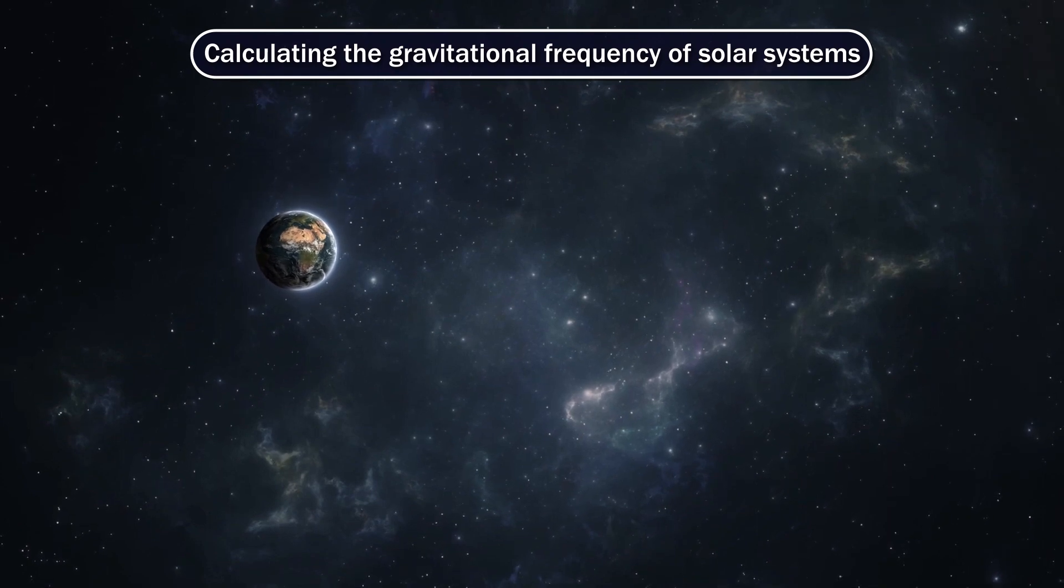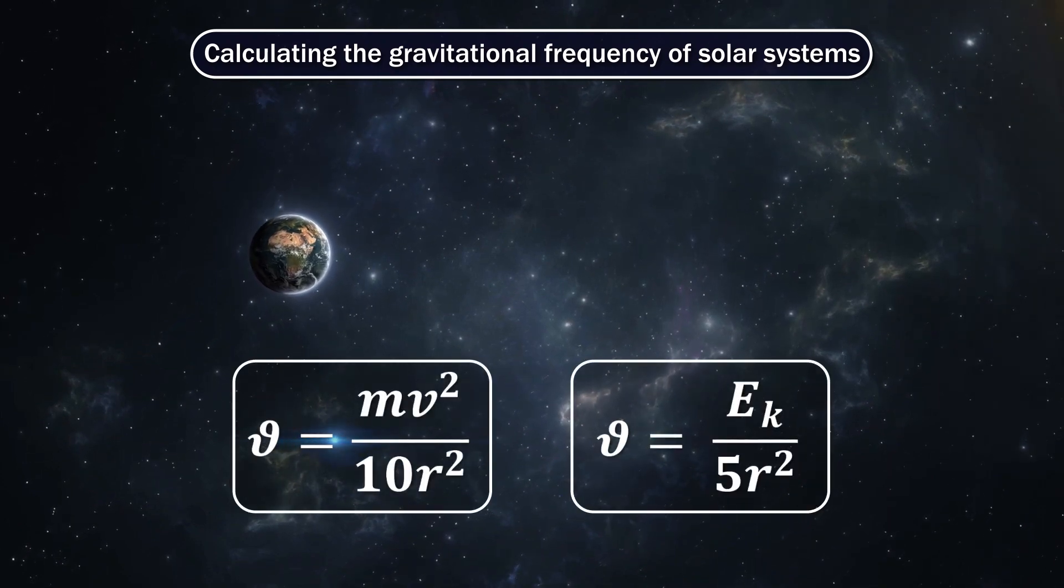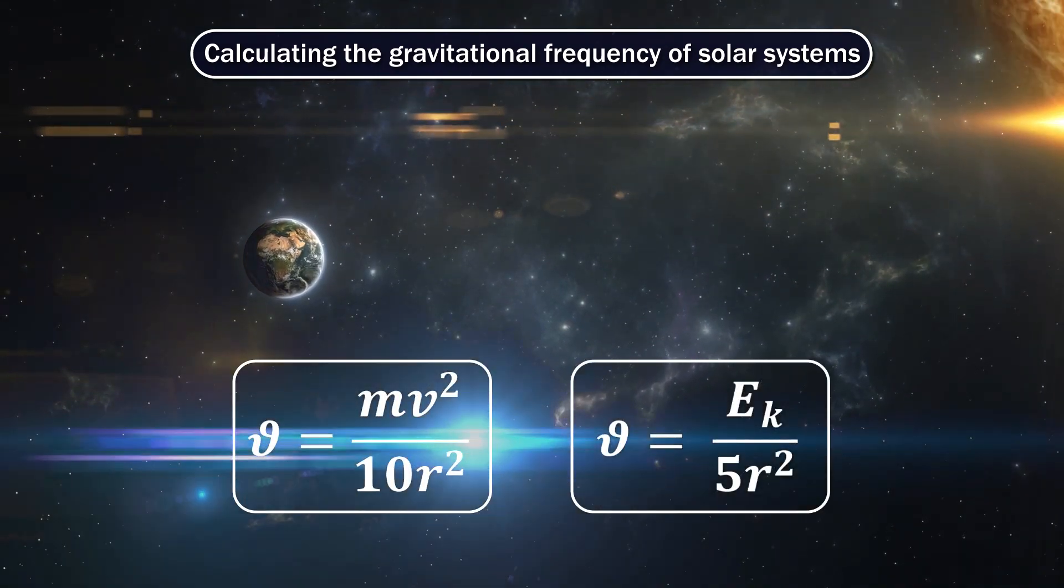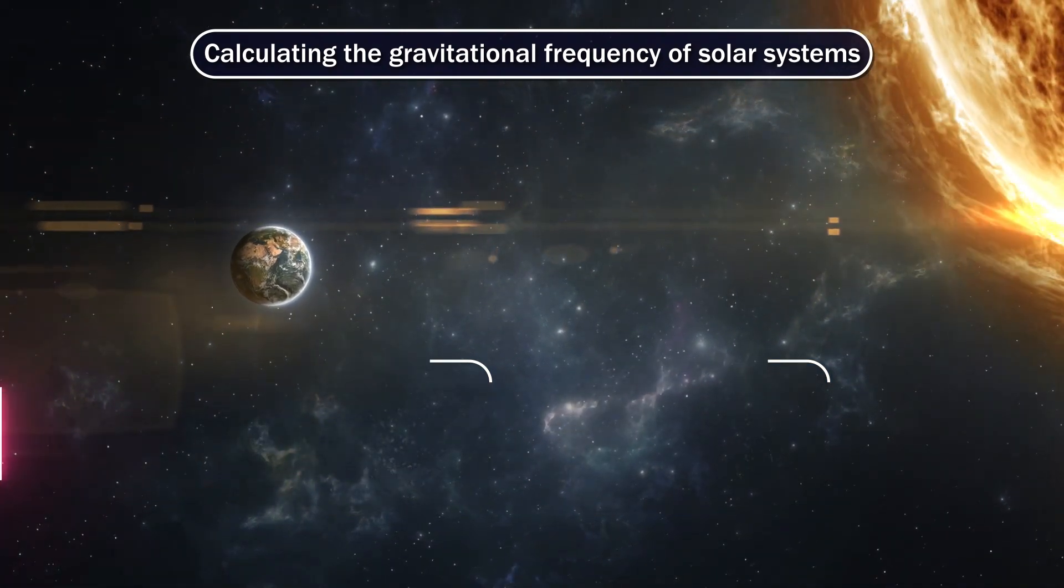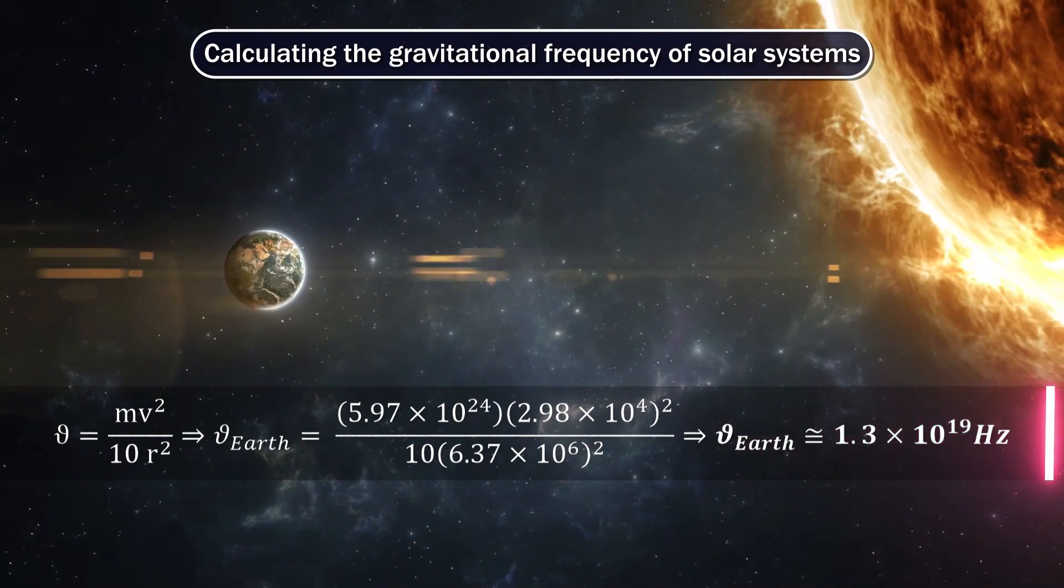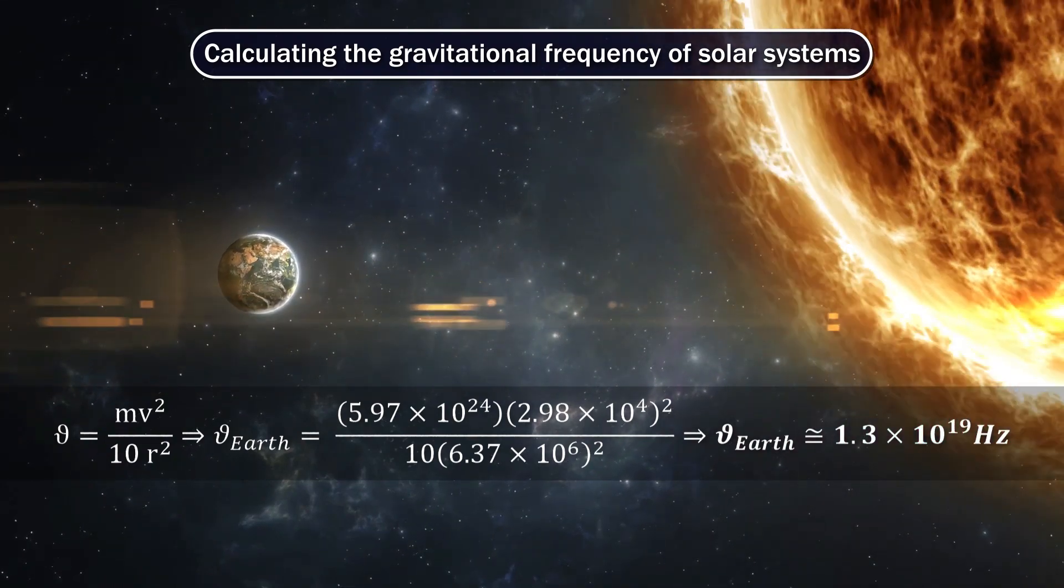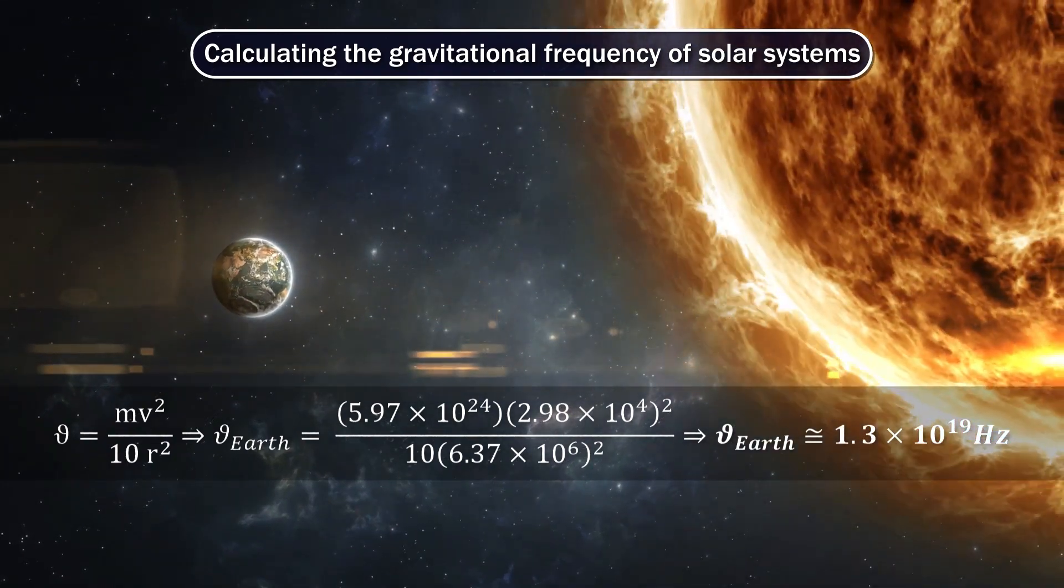And finally, the gravitational frequency will be equal to... Now, according to the last formula, we compute the gravitational frequency between Earth and Sun.